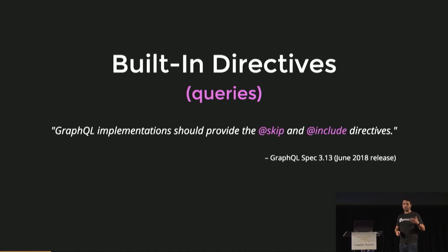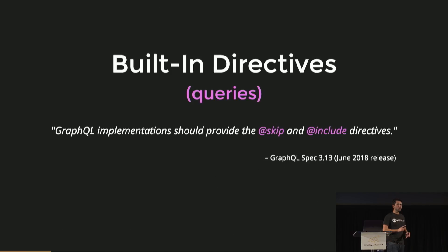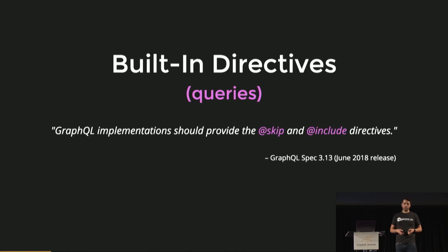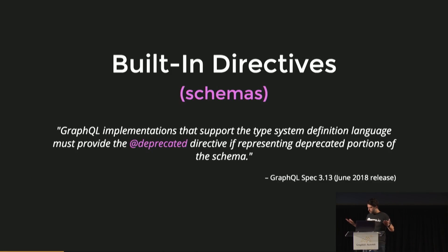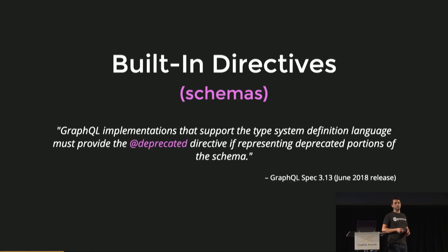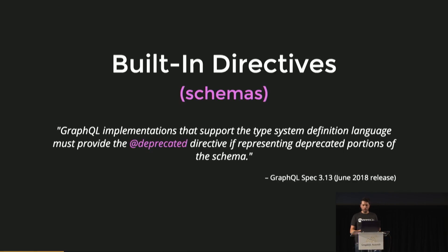With directives in mind, we've got built-in directives. When we're talking about queries, the spec talks about the skip and include directives — skip if there's some condition that's true or false, include is kind of the inverse. At the schema level, the spec really just talks about the deprecated directive. After that, it basically says if you want to do directives, it's up to you — implement it however you want. That's been a sticking point historically, because there hasn't been a super clear-cut way of doing it.